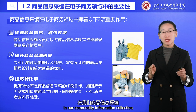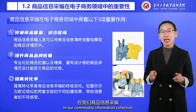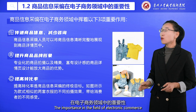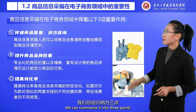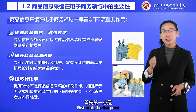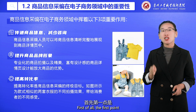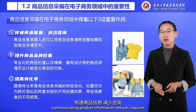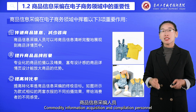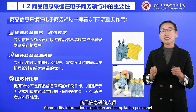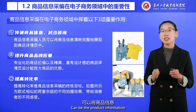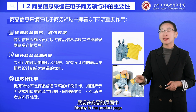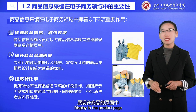Regarding the importance of commodity information collection in the field of electronic commerce, we can summarize it into three points. The first point: communicating product information reduces inquiries. Commodity information acquisition and compilation personnel can display the product information more clearly and completely on the product page.